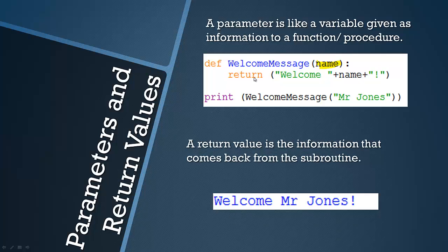And so obviously the return value, if you follow this, will be welcome Mr. Jones because we're giving Mr. Jones as the parameter and it's using it as like a variable here. So it will be welcome Mr. Jones. And that will be the return value.